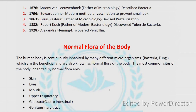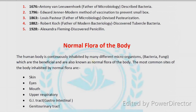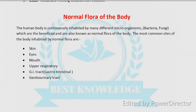The human body is naturally inhabited by many different microorganisms — bacteria and fungi — which are beneficial and are also known as the normal flora of the body. The most common sites of the body inhabited by normal flora include skin, eye, mouth, upper respiratory tract, GI tract, and genitourinary tract.